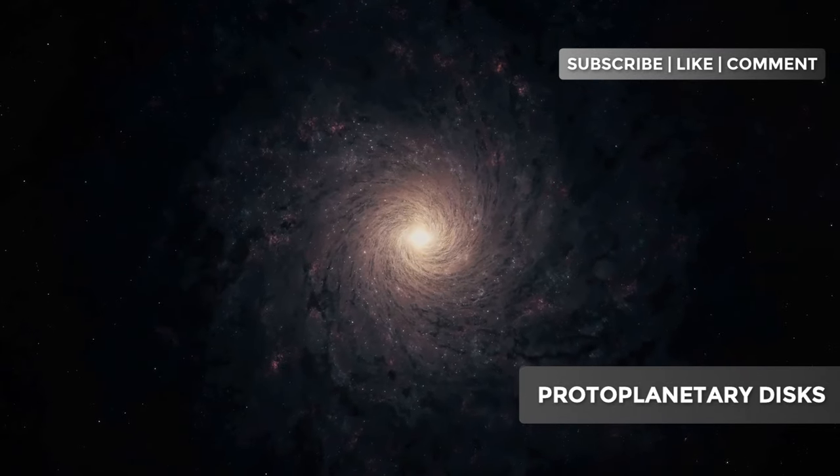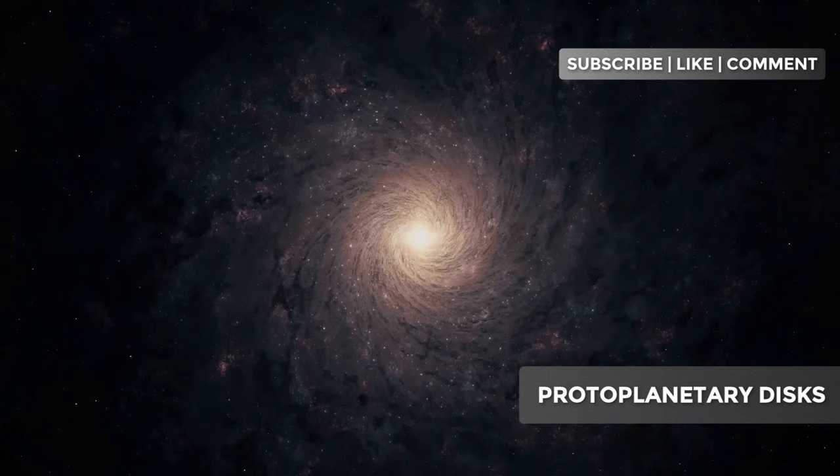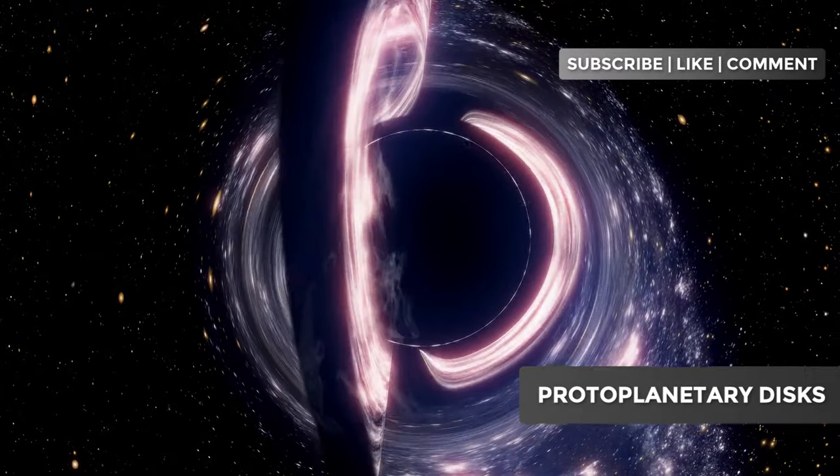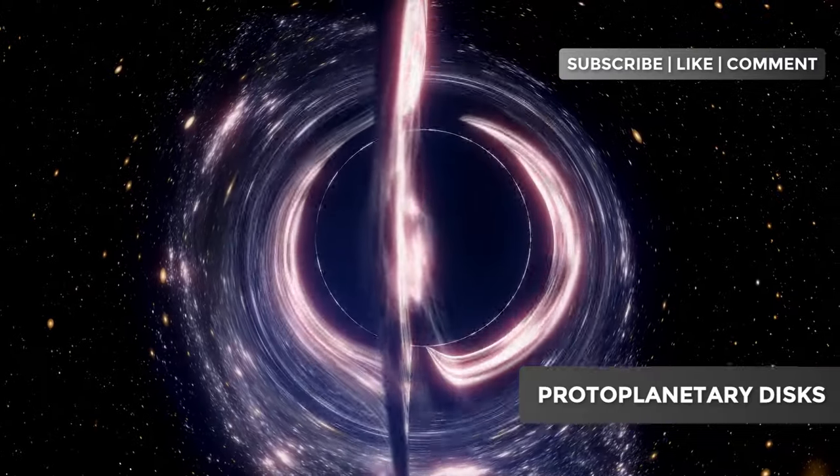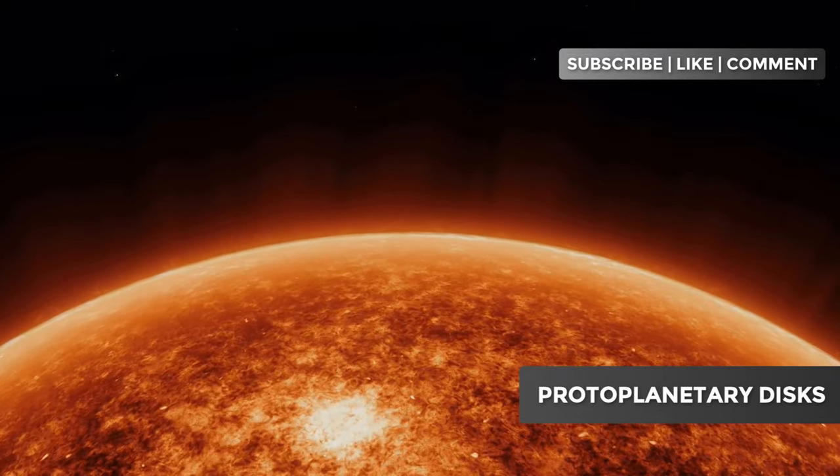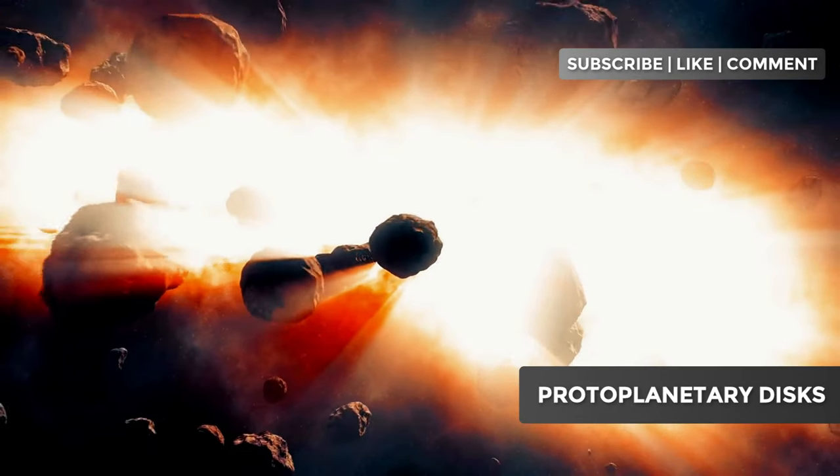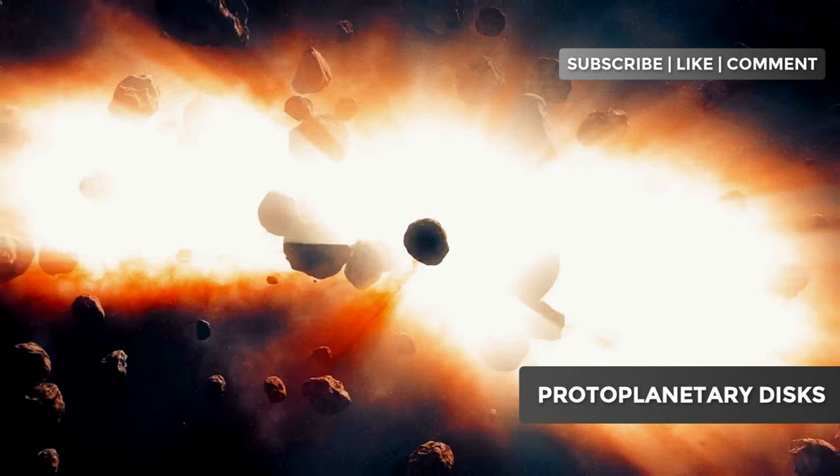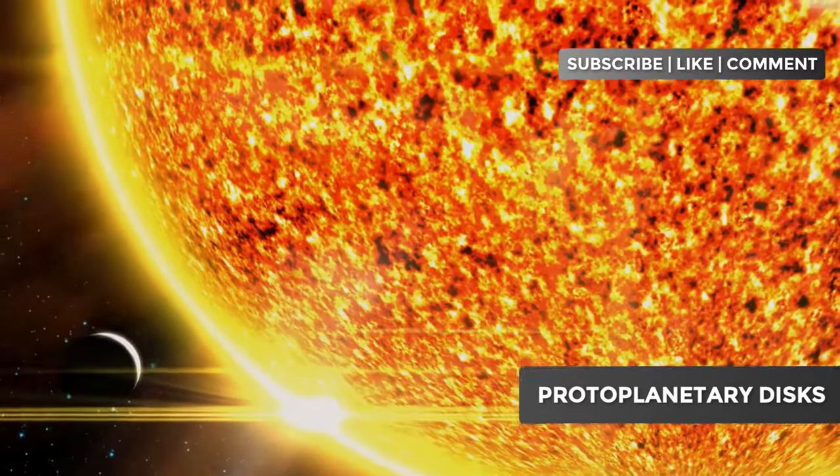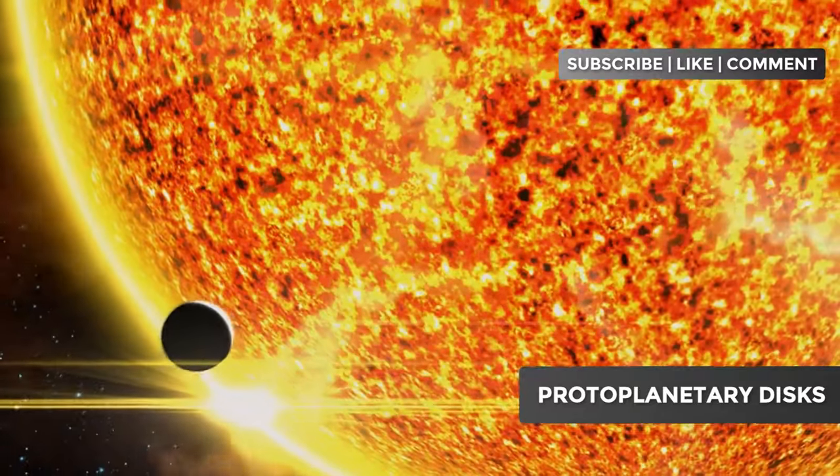Protoplanetary disks are complex and fascinating structures, with an anatomy that reflects the physical processes at work during planetary formation. Understanding this structure is crucial to unraveling the mysteries of planet birth. In the innermost region of the disk, close to the central star, we find extremely high temperatures. Here, only the most heat-resistant materials, such as metals and silicates, can survive in solid form. This region is the nursery of future rocky planets, like Mercury, Venus, Earth, and Mars in our solar system.